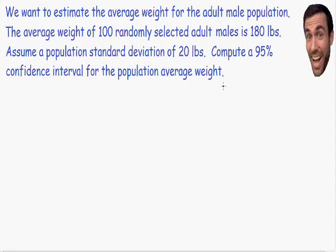In a perfect world, we would measure the weight of every single adult male in the entire world and get an exact measurement for the average weight of the entire adult male population. If we use our common sense, we know this is not possible. This is why confidence intervals are so useful — we can take a small sample of 100 randomly selected adult males, or any size sample, and get a very good estimation for the average weight of the entire adult male population.